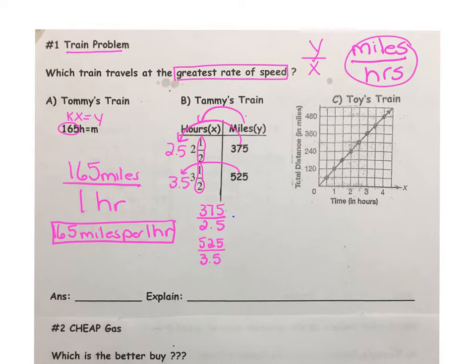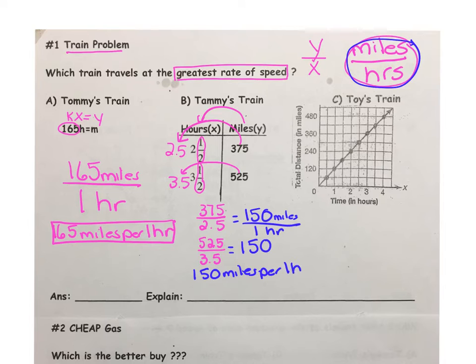You should have gotten 150 for each of these. But let's dress it up with labels. This really means 150 miles per one hour. Clearly, Tammy's train is a little bit slower than Tommy's. So she comes in at a rate of 150 miles per one hour.